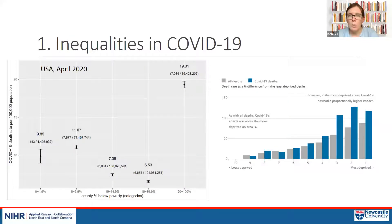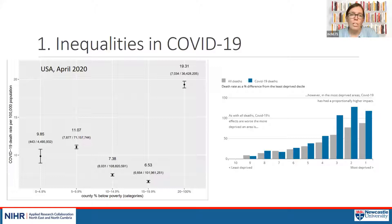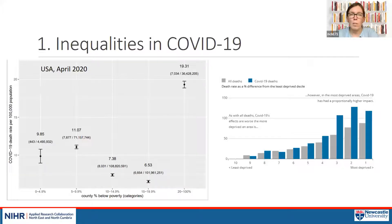What do we know about the inequalities in COVID-19? There's been a lot of data released over the summer from various institutes and government agencies. Here are two graphs showing the relationship between COVID-19 mortality and deprivation or poverty. On the left is a graph from the United States looking at the relationship between the proportion of people in a county living in poverty and COVID-19 death rates. In areas with less than 5% below the federal poverty line, the mortality rate is around 10 per hundred thousand — compared to 19 in areas where poverty rates are over 20%.